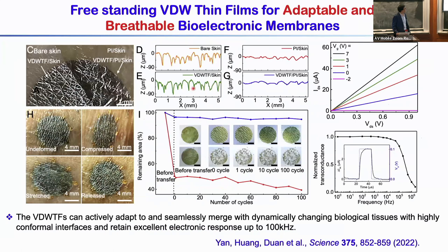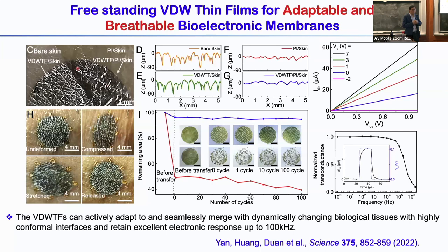This is just one example — if we transfer the van der Waals thin film on top of skin: on the left side is a freestanding van der Waals thin film, 23 nanometers thickness; on the right side is a thin film on top of a plastic PI layer about 1.6 micrometers. We've heard a lot about flexible or conformal electronics, but even with the 1.6 micrometer plastic membrane, after placing on skin, it loses all the fine skin textures. On the other hand, the van der Waals thin film, the skin texture is essentially the same as bare skin. This gives us an extremely conformal interface, and if we place them on skin, because of structural conformability, we can repeatedly stretch and squeeze them without flicking off.